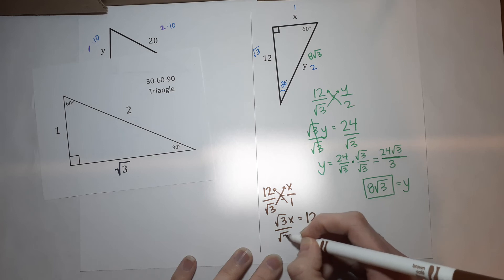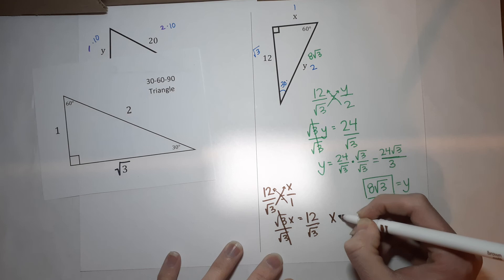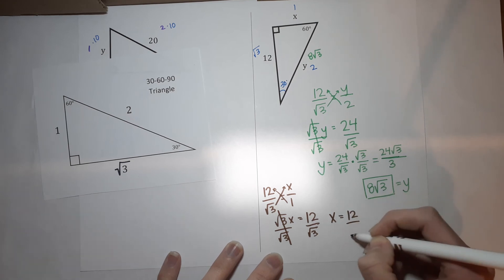So I'm going to divide off that square root of 3. Divide off the square root of 3. So I get X equals 12 square roots of 12, sorry, 12 over the square root of 3.